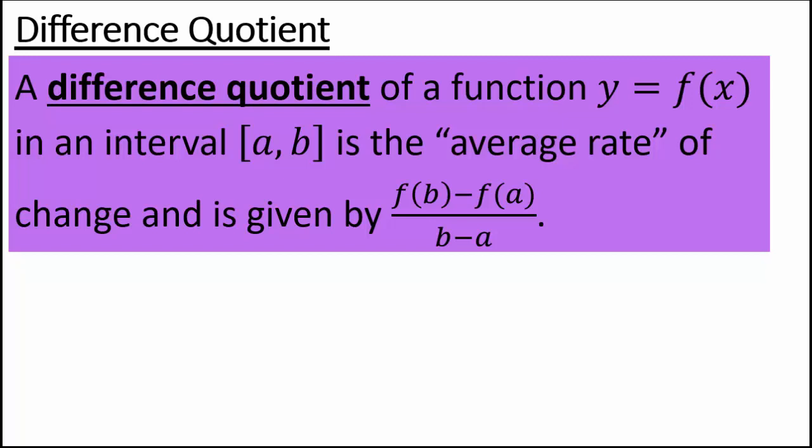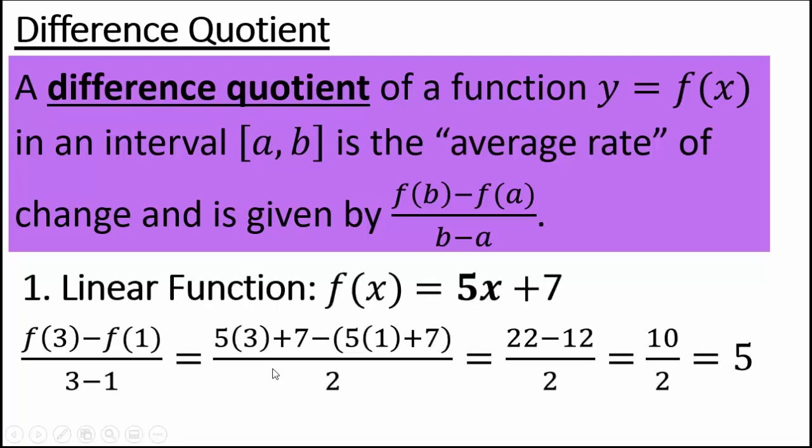So what does that mean? Let's take an example. The first example is linear function f(x) equals 5x plus 7. You want to compute f(3) minus f(1) over 3 minus 1. f(3), you just plug in 3 for x in the original function, so 5 times 3 plus 7 minus f(1), which would be evaluating the function at 1, so 5 times 1 plus 7.